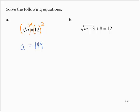Now, exercise b is a little bit more complicated. The square root of m minus 3 plus 8 is equal to 12.